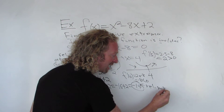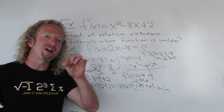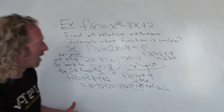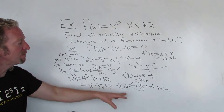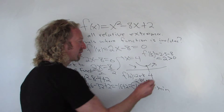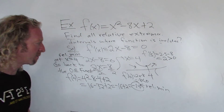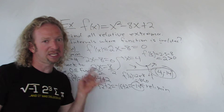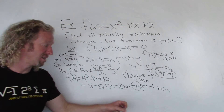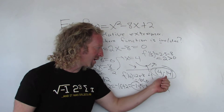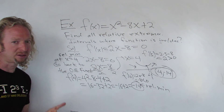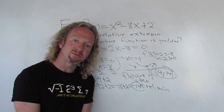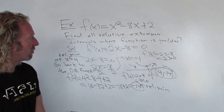Negative 14 is the relative minimum — it's the smallest y-value relative to the points around it. Some people write the ordered pair 4 comma negative 14, but keep in mind the actual relative minimum is the y-value negative 14, not the ordered pair. These are also called local minimums — local minimum and relative minimum mean the same thing.